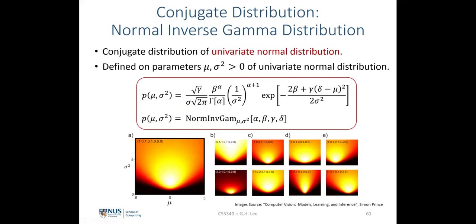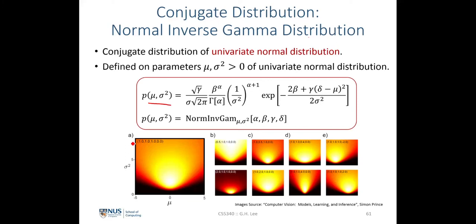There is also a conjugate distribution for the univariate normal distribution defined over its two parameters mu and sigma squared. This is the normal-inverse-gamma distribution. By changing the four hyperparameters — alpha, beta, gamma, and delta — we change the confidence about what values mu and sigma squared will take.